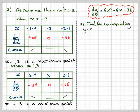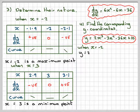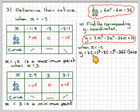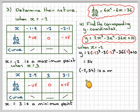Step 4 is to find the corresponding y-coordinates by substituting back into the original y equation. Substituting x = -2: y = 2(-2)³ - 3(-2)² - 36(-2) + 10. Make sure to put negative numbers in brackets on the calculator. That gives y = 54. Therefore (-2, 54) is a maximum point.